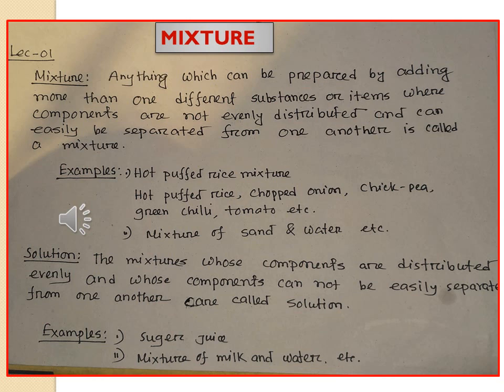You can consider the example of hot puffed rice mixture. If you want to make this mixture you have to add hot puffed rice with soft onion, stick pea, green chili, and tomato. In this mixture all the components are not evenly distributed, and all the components can easily be separated from one another, so puffed rice mixture is an example of a mixture. Similarly, in a mixture of sand and water, you can easily separate sand from water and sand is not evenly distributed throughout the mixture.